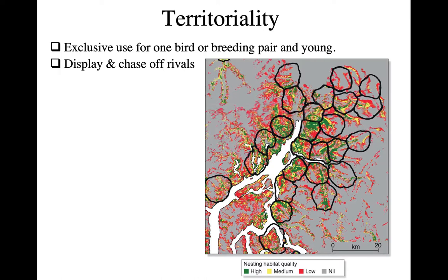Territoriality involves vocalizations, which help to establish where those boundaries are as a display, and some visual displays are usually associated with that. We've been seeing birds that are normally relatively shy, like brown thrashers, perched up much higher — the male singing and indicating both a vocal and a visual display. Oftentimes, especially early in the breeding season, there is active chasing off of potential rivals trying to invade the territory. This is mostly male competition, but in some cases females are also involved in territorial defense.